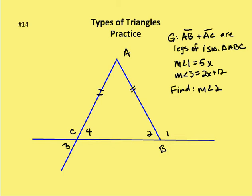We're asked to find the measure of angle 2. Well, we know the measure of angle 2 is going to be congruent to the measure of angle 4, because if we have sides that are congruent, the angles that are opposite them are congruent. So let's just mark that up here. Angle 2 and angle 4 are congruent.